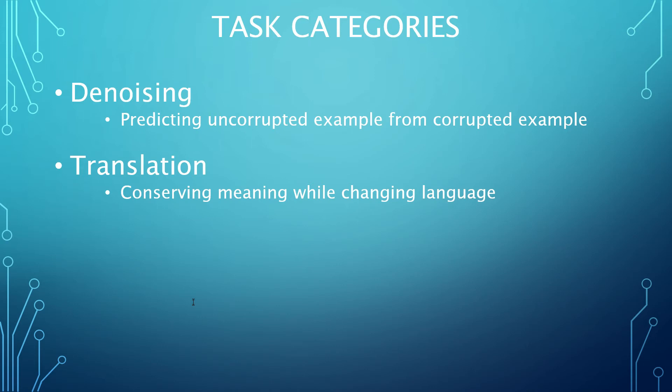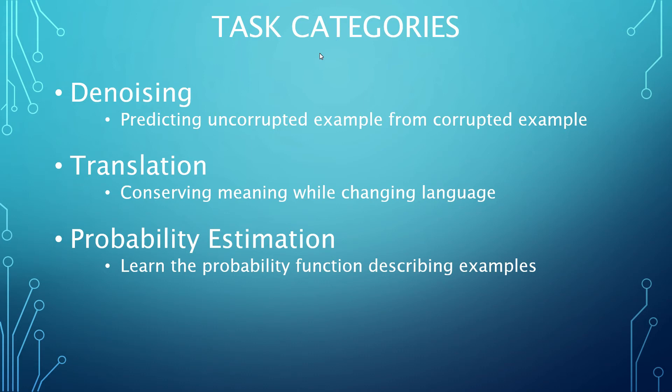The task of probability estimation is where the algorithm must learn the probability function that describes the space that examples were drawn from. While most of the tasks mentioned previously require an algorithm to implicitly capture the structure of a data distribution, this category of task explicitly demands that the probability distribution be captured. Performing this task can then allow the distribution generated to be used to solve other problems as well. In practice, however, there are limitations to doing this based on the math that can be performed with the generated probability function.